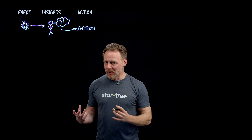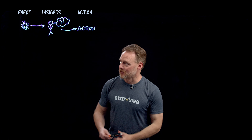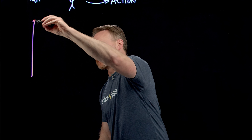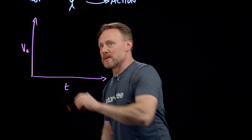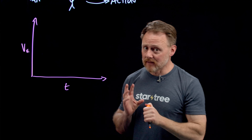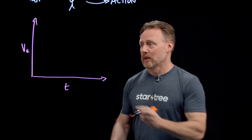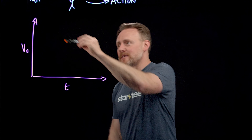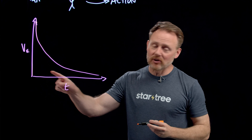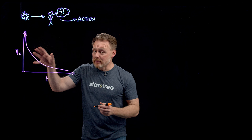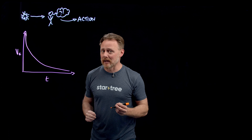When we know about an event and when we take action is very important. Here's a diagram to illustrate. On one axis we have time, on the other the value of the event. When the event happens, it tells us a lot about what's true in the world — so it's very valuable at that moment. That value declines precipitously as time goes on, because the relevance of the event is just less true as time goes by.